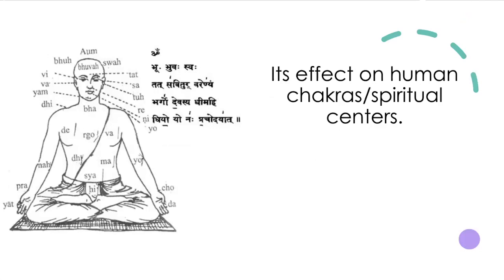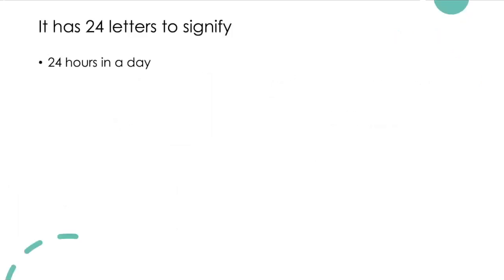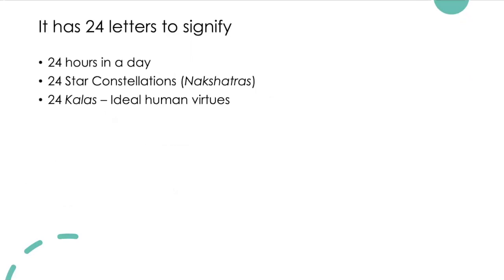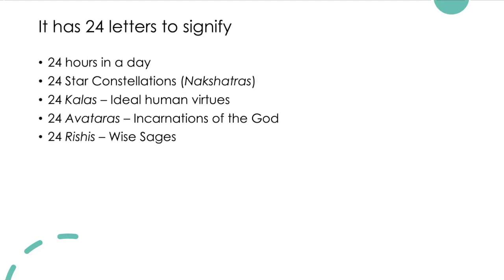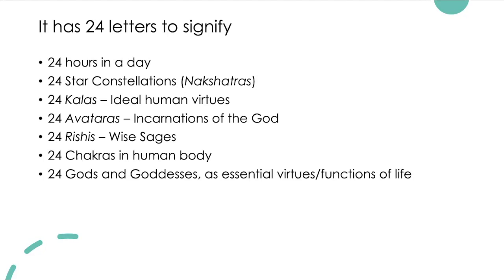Here is a picture describing the mantra's effect on human chakras or spiritual centers. It has 24 letters to signify: 24 hours in a day, 24 star constellations or nakshatras, 24 kalas or ideal human virtues, 24 avataras or incarnations of God, 24 rishis or wise sages, and 24 chakras in the human body.